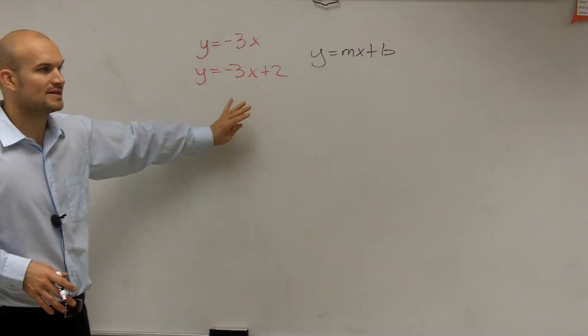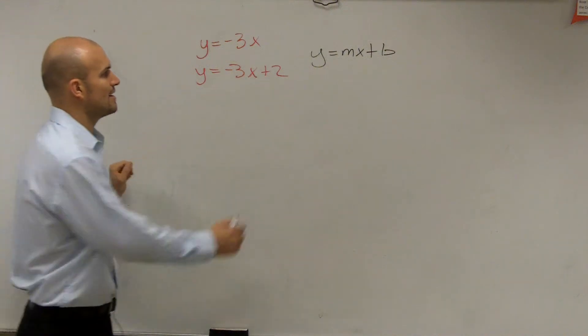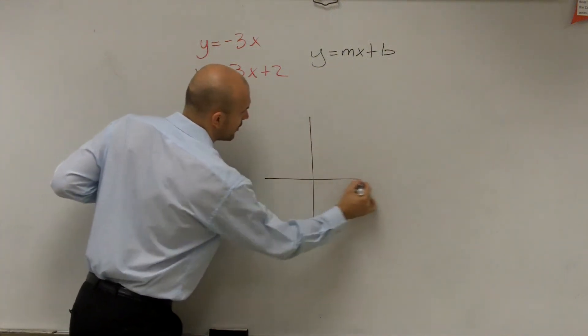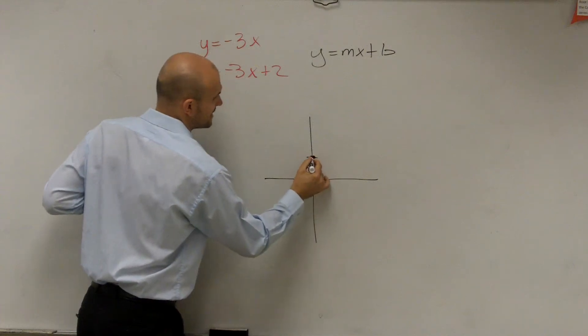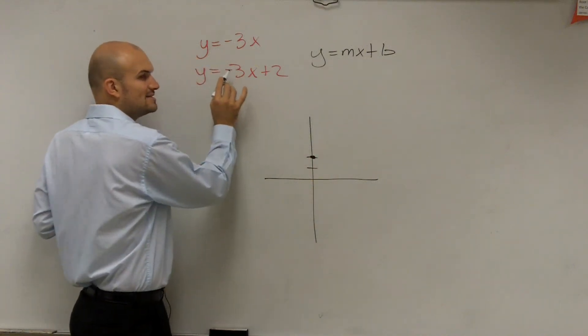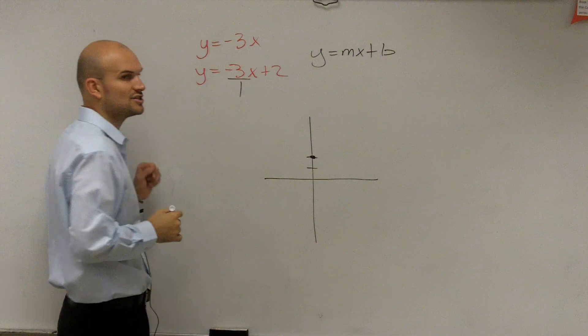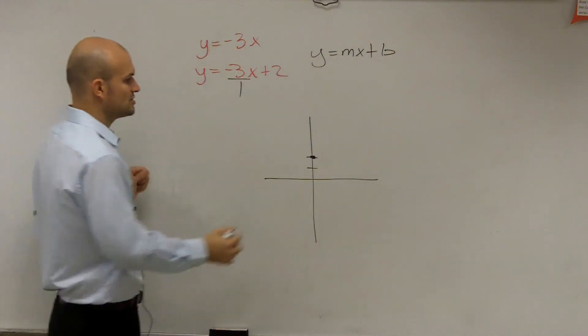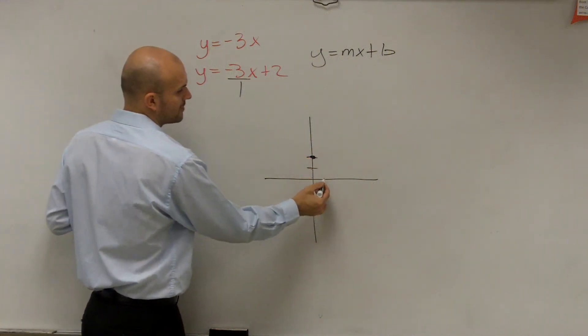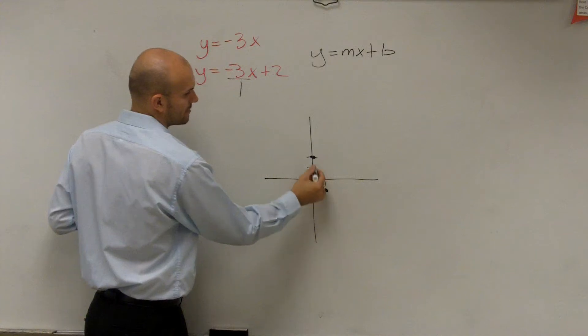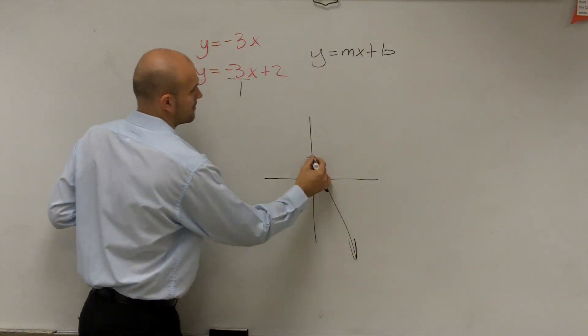But how do I graph this? Well, first of all, this one we can graph because we know the y-intercept is at 2. So I go up to 2, and I make a nice big dot. The slope is negative 3. We can write it as a fraction of negative 3 over 1, which tells me I can go down 3 to the right 1. Connect my points.